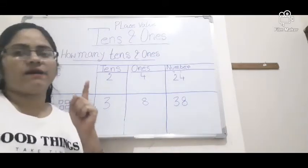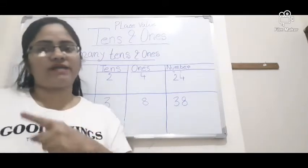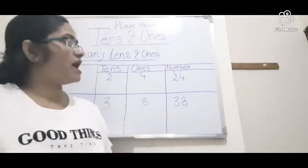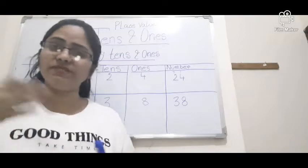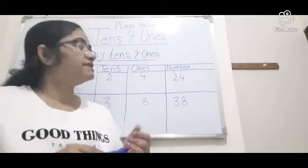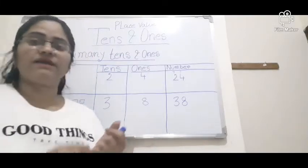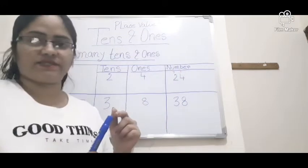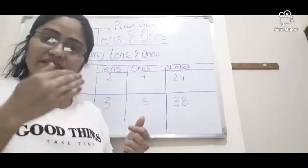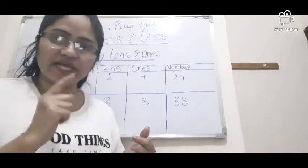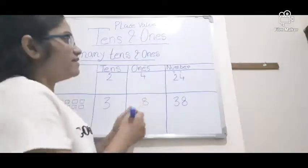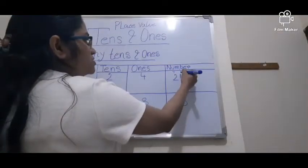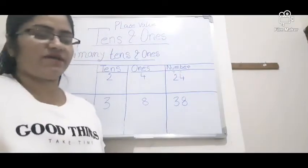In the 1s place or unit place, every time there is a one-digit number. That means numbers 1 to 9 can be written in the 1s place position. When the number reaches 10, we write 1 in the 10s place and 0 in the 1s place.